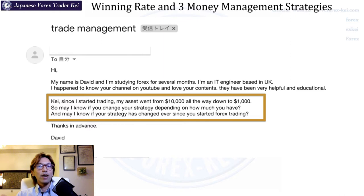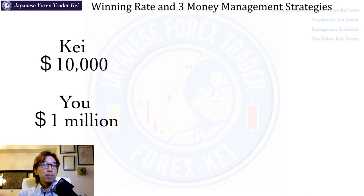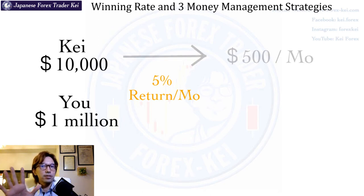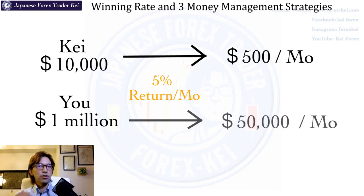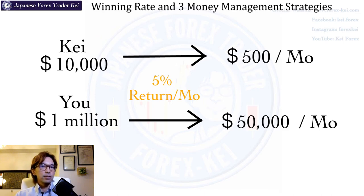Thank you Mr. David for your email. I get similar questions like this — how much do I need to have to start trading, or how much risk should I take when starting with $1,000. So first, let me talk about how you think about the amount of money to trade. Let's say I have $10,000 and you have $1,000,000, and we both know a trading strategy that gives us 5% per month. In that case, I earn $500 every month, but you earn $50,000 consistently every month and can live freely on that.